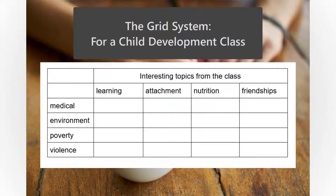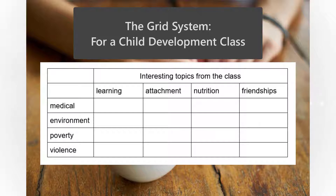Then write them down on your grid, and see what you come up with in the intersections. Let's say I'm taking a class on child development. I write down my four favorite things from the material we've studied, and four things from the social issues part of the list.